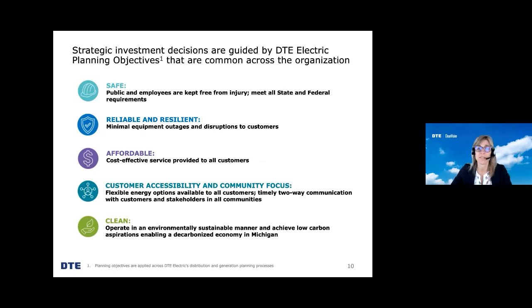These planning objectives are common across the electric organization and guide both our generation and distribution strategic investment decisions. The IRP focuses on generation, but DTE Electric also has a distribution grid plan that was filed with the state late last year, addressing the needs of the distribution grid to deliver reliable and affordable energy to our customers. You'll hear more about our distribution grid plan later in the presentation.